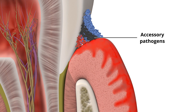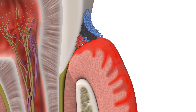These pathogens have similar characteristics to Porphyromonas gingivalis, but need Porphyromonas gingivalis to become established. Once established, they reinforce Porphyromonas gingivalis and the imbalance with the host, resulting in a state of dysbiosis.